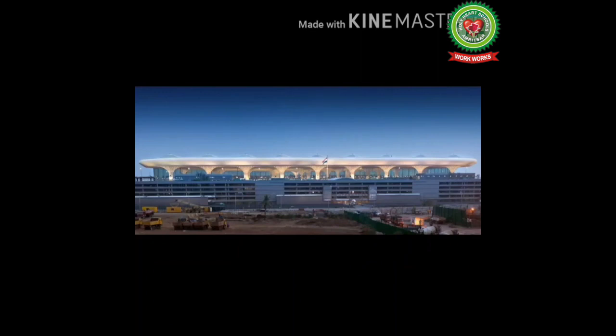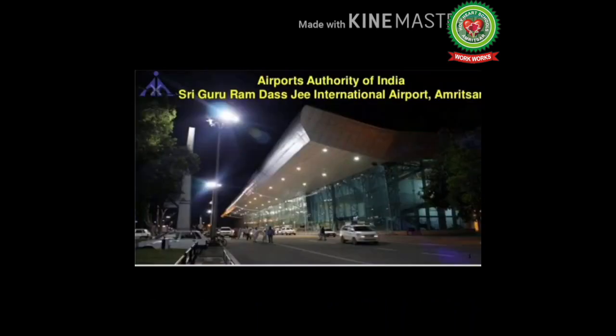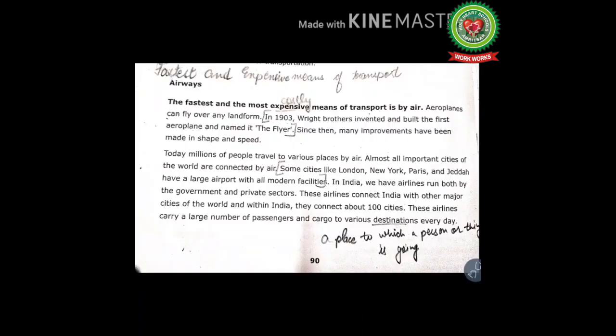Here you can see Indira Gandhi International Airport in Delhi, Chhatrapati Shivaji International Airport in Mumbai, and Sri Guru Ram Dass Jee International Airport in Amritsar. These airlines carry a large number of passengers and cargo to various destinations every day. Mark the meaning of destination: a place to which a person or thing is going.